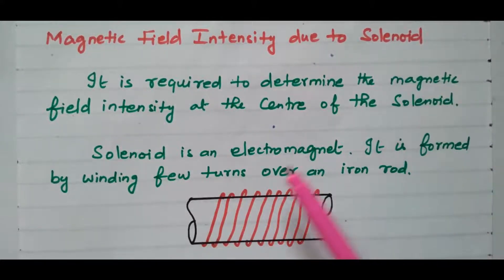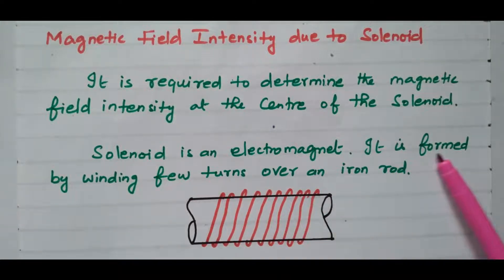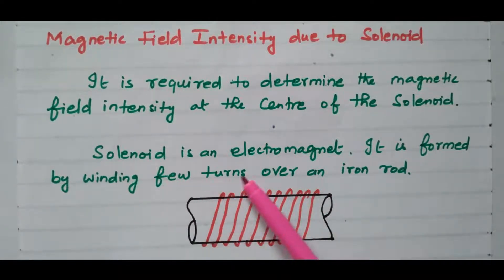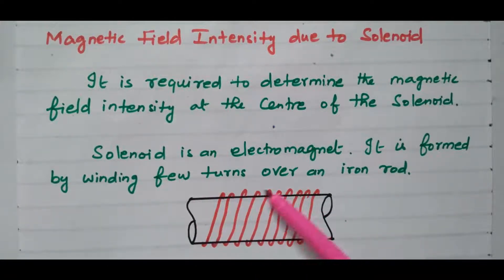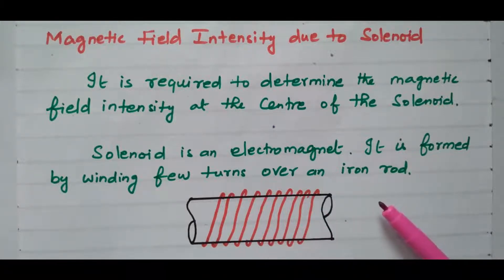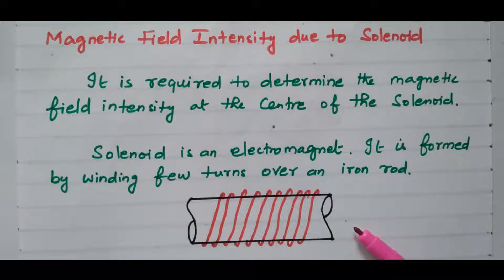What is a solenoid? A solenoid is an electromagnet. It is formed by winding a few turns over an iron rod. So the iron rod is there, over that the coils are wound. When the supply is given, it becomes an electromagnet.